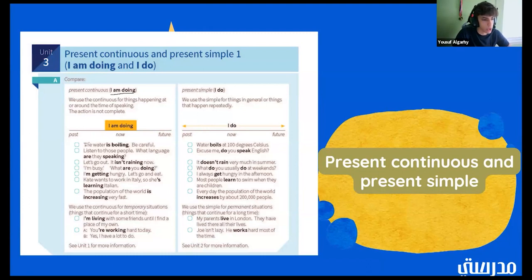So sometimes present simple is a lot more specific than present continuous. Like, for example, here we just have the water is boiling. But for present simple, we have more facts as saying that the water boils at 100 degrees Celsius. So we use the simple for permanent situations, things that will always happen or will continue for a long time. My parents live in London. They have lived there all their lives. Joe isn't lazy. He works hard most of the time. So that's an overview over the present continuous and the present simple.